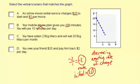You've eaten two Big Macs and will eat 20 Big Macs per month. Wow, that's a lot of Big Macs. The initial value here is 2. We're looking for an initial of 20, so this one's out. And actually, the 20 is the rate, so the 2 and the 20 are actually reversed here.